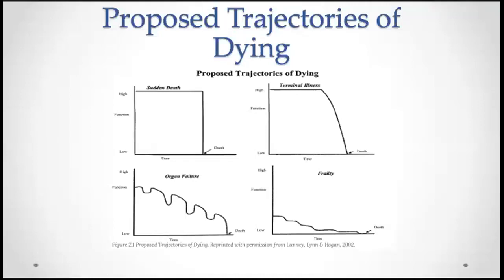Have you ever asked yourself how you think you will die? It's a confronting question, but there are only four ways to die — really just three: sudden, fast, or slow. It may be an interesting exercise to consider what the most likely trajectory will be for you and which you would prefer. If you have some ideas around this, it may be time to make sure you have a plan that might avoid your least favourite.